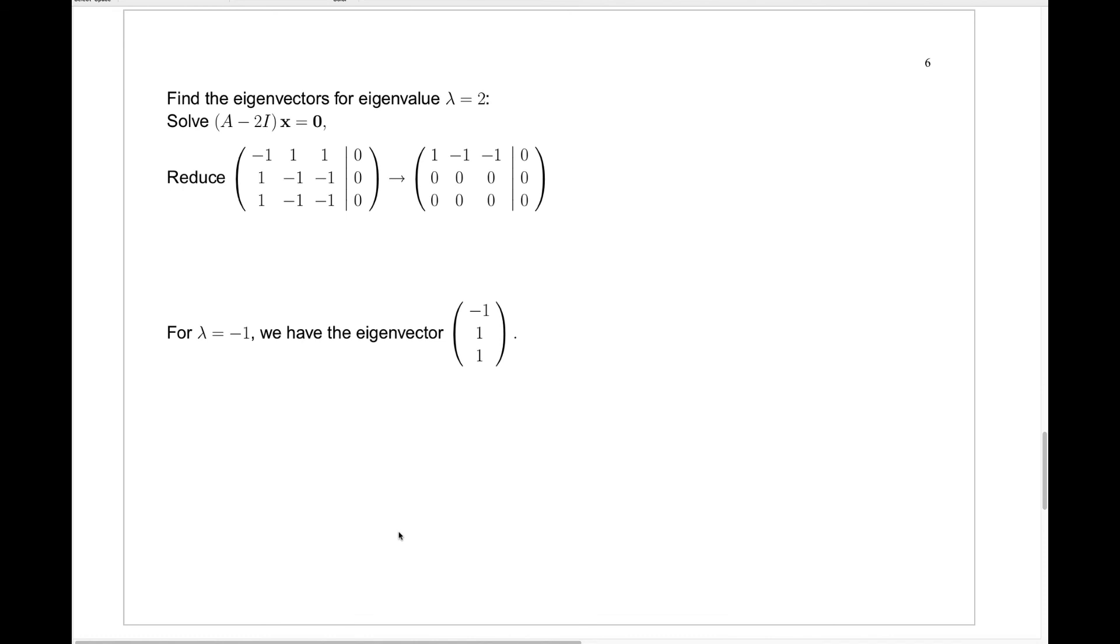So let's find the eigenvectors corresponding to lambda equals 2. That means we solve the equation A minus 2I times x is the zero vector. So we write down this augmented matrix—this is A minus 2I. I've just subtracted 2 down the diagonal from the original matrix A.